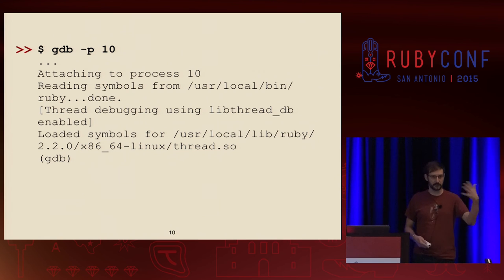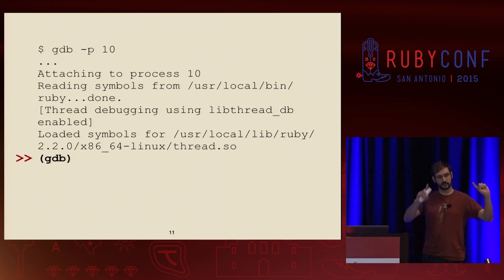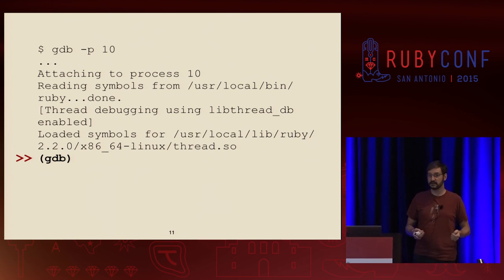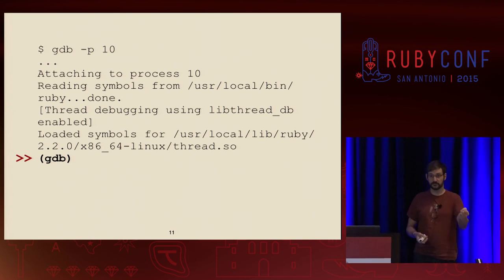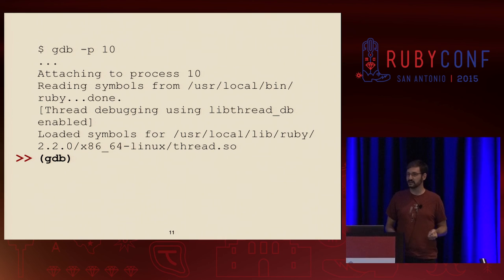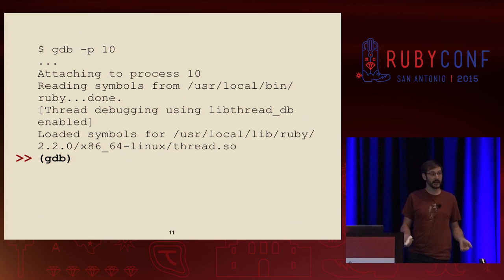GDB is going to throw a fair amount of output — it's going to tell you it's attaching to things, it may spit out stuff about symbols it's loading. But then eventually it lands you at a prompt. When there is a parentheses GDB prompt, that is a prompt within GDB itself where you can issue commands. GDB has taken the process that was running, paused its execution, and is now asking: what do you want to do? The first thing you might want to know is where is this code that's executing? Where am I actually stopped?